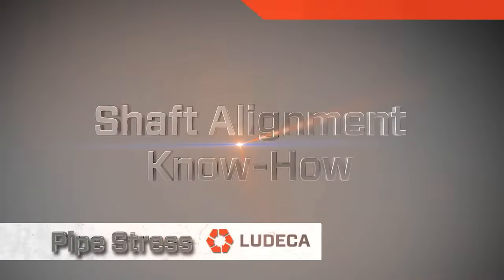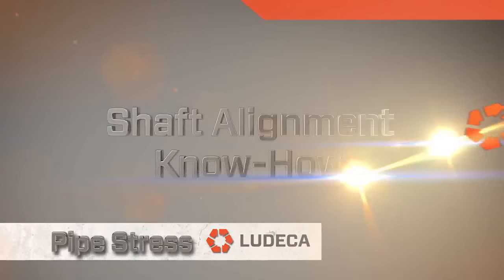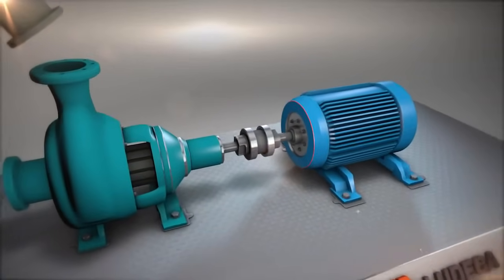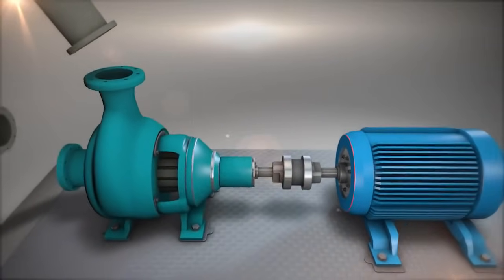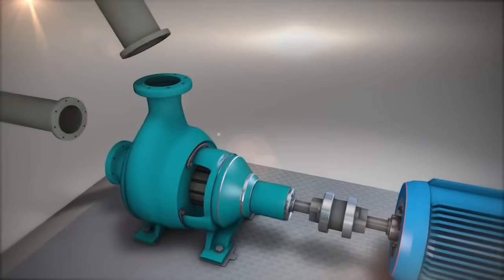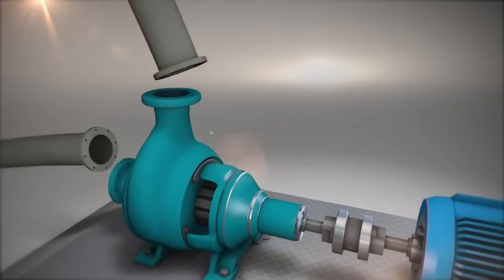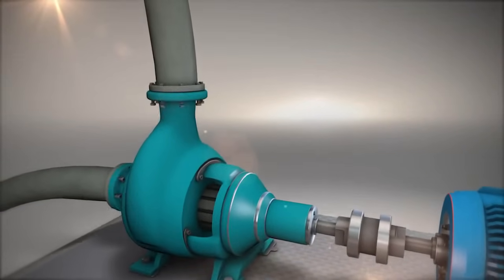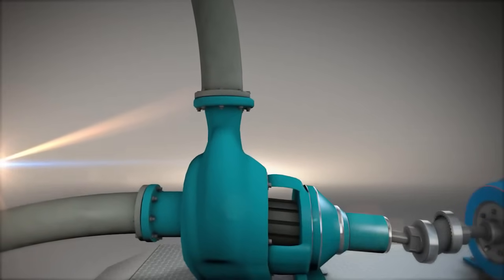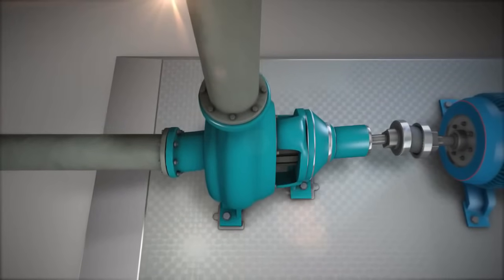Shaft alignment know-how: Pipe stress. Often during pump installations, pipe and pump flanges are not in alignment. When mated together, the pipe stress pulls on the pump flange. This forces the frame of the pump to distort vertically and or horizontally.